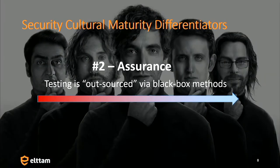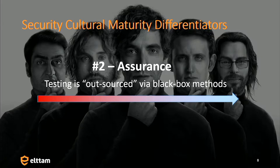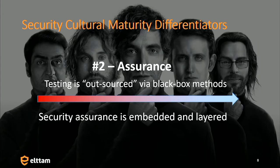The second thing is assurance and how they approach security assurance. Testing being outsourced via black box method — black box pen testing where you're just doing it at release, just before production, or maybe in production, to catch weaknesses. This is the common pattern where it ends up in risk acceptance and a bunch of vendor mitigations being plugged in front of it. On the other end, you see things being very collaborative, embedded, and very layered based on threat models — trying to rationalize what's most important.